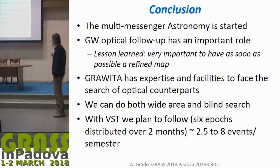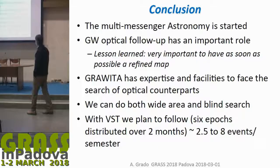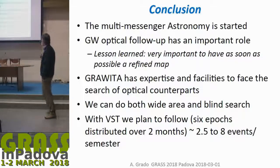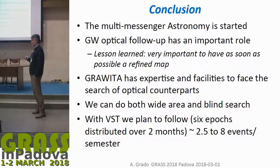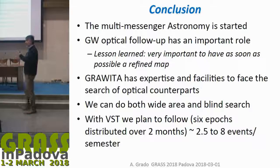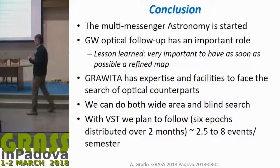In conclusion, multi-messenger astronomy has started — we are all happy and that is the reason why we are here. Optical follow-up is very important, and it is critical to have a refined localization map as soon as possible. With three or more detectors, the area will be smaller, but even a large offset can mean we miss the source.